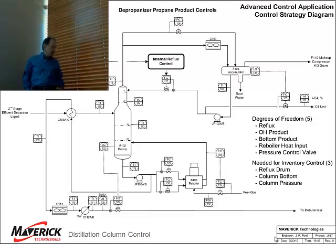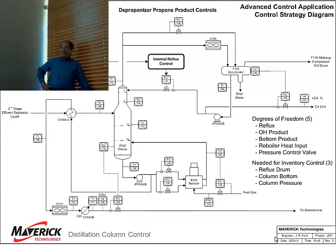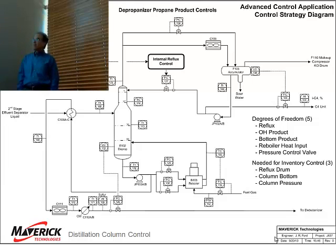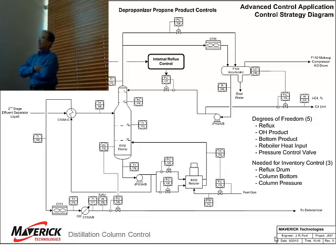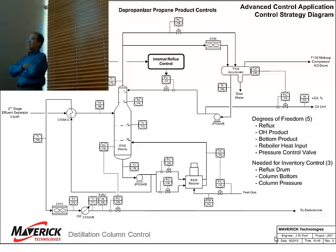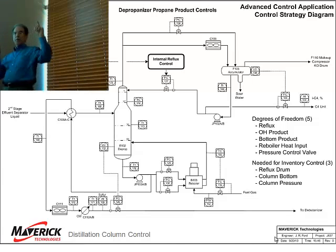On the process identification model: the temperature in the column correlates to purity, and there's a lag before the analyzer reads. When first described it seemed like just a delay — the temperature is this, and 10 minutes later the analyzer reads it. But there's a dead time and a separate lag. The dead time is the time it takes from the sampling point to get to the GC, and the lag is the time it takes going through the chromatograph column.